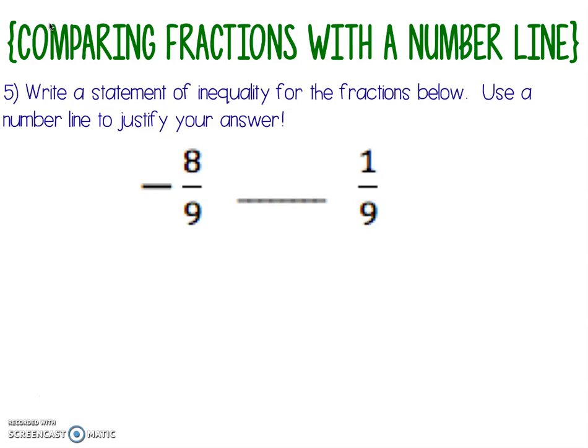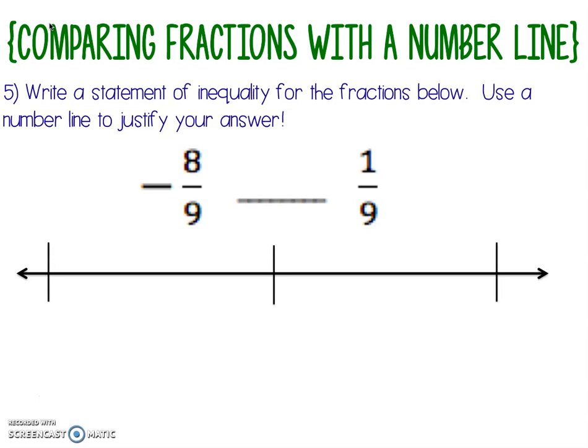So we've got negative eight ninths and one ninth, so that means when we set up our number line, we're going to have to break it into ninths. First thing, draw your number line. Then we're going to put our whole numbers on here — none of these are greater than one, so I know that I can just go from negative one to positive one.